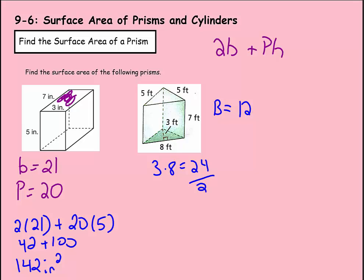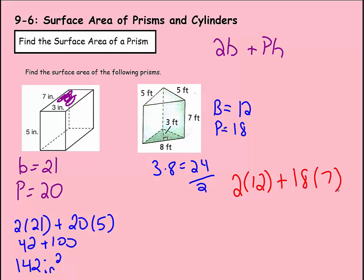The perimeter is the distance around the triangle. We have 5, 5, and 8, so 5 plus 5 plus 8 equals 18. Plugging into the formula: 2 times 12 plus 18 times 7. Two times 12 is 24, and 18 times 7 is 126. So 24 plus 126 equals 150 square feet.